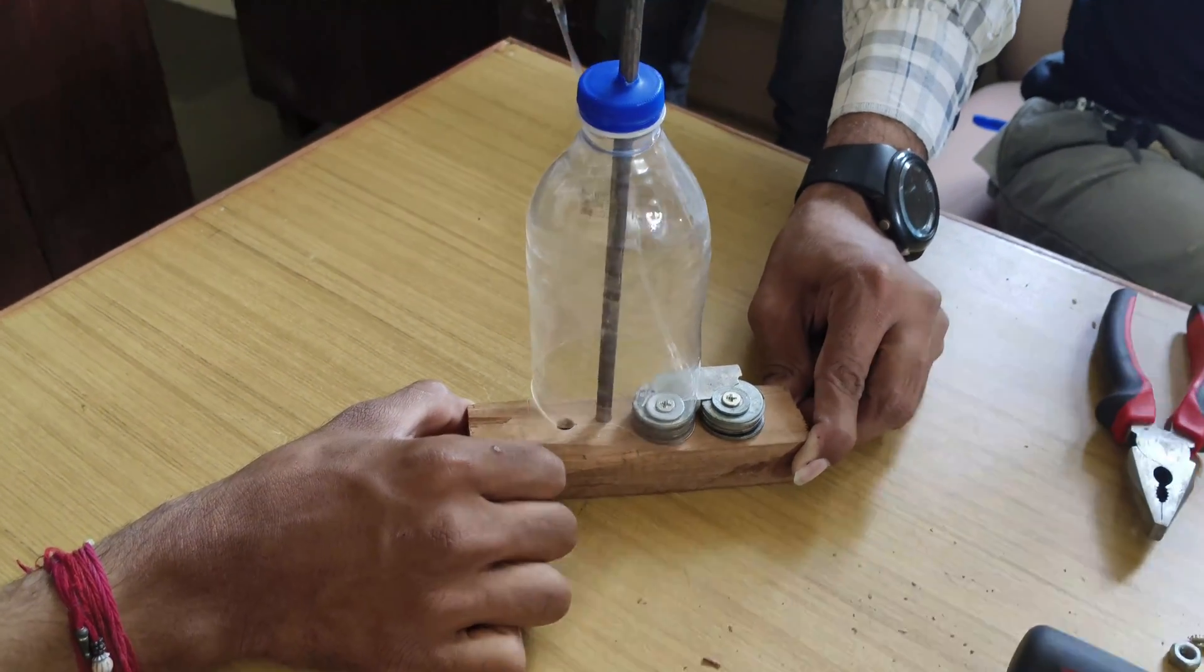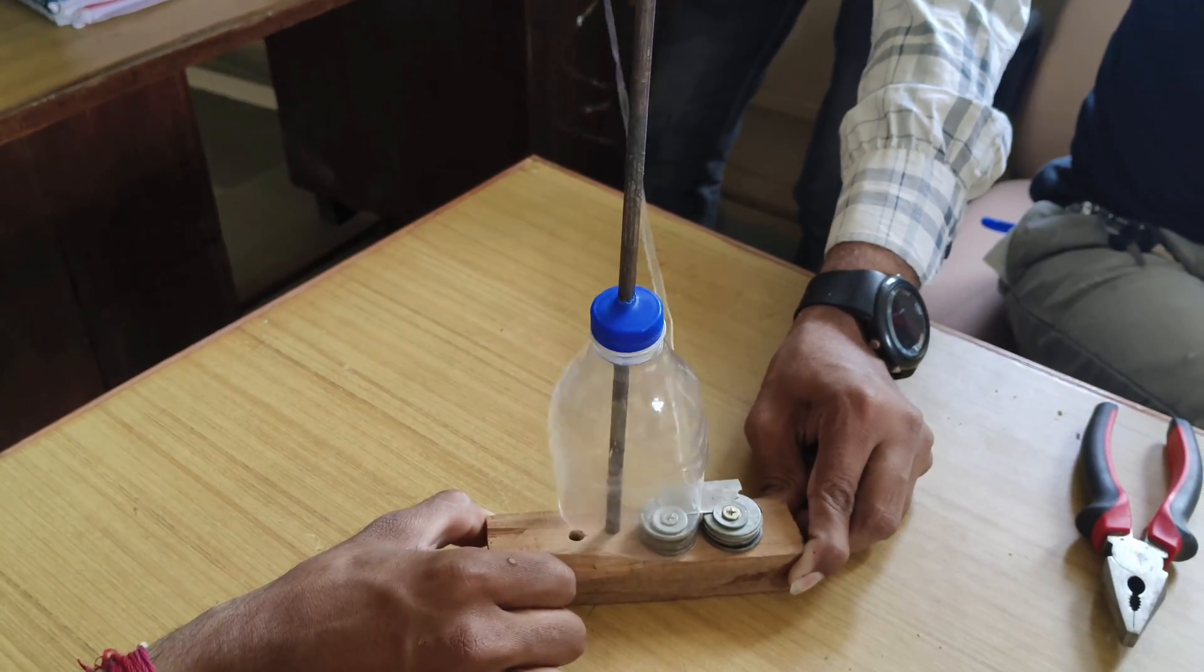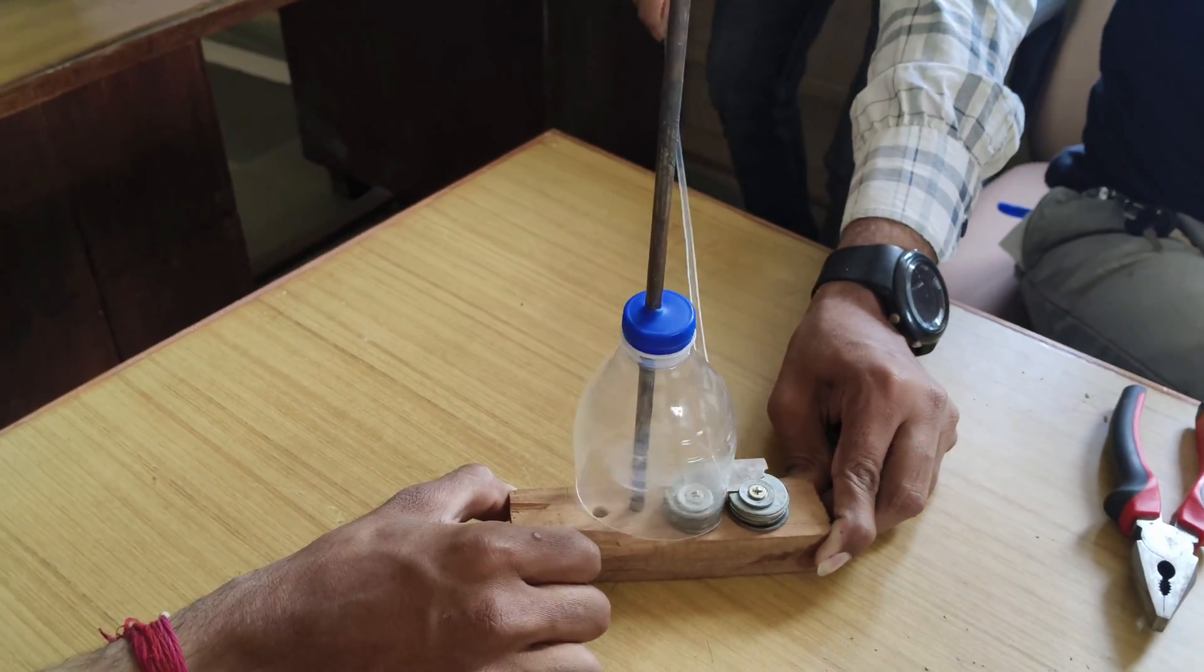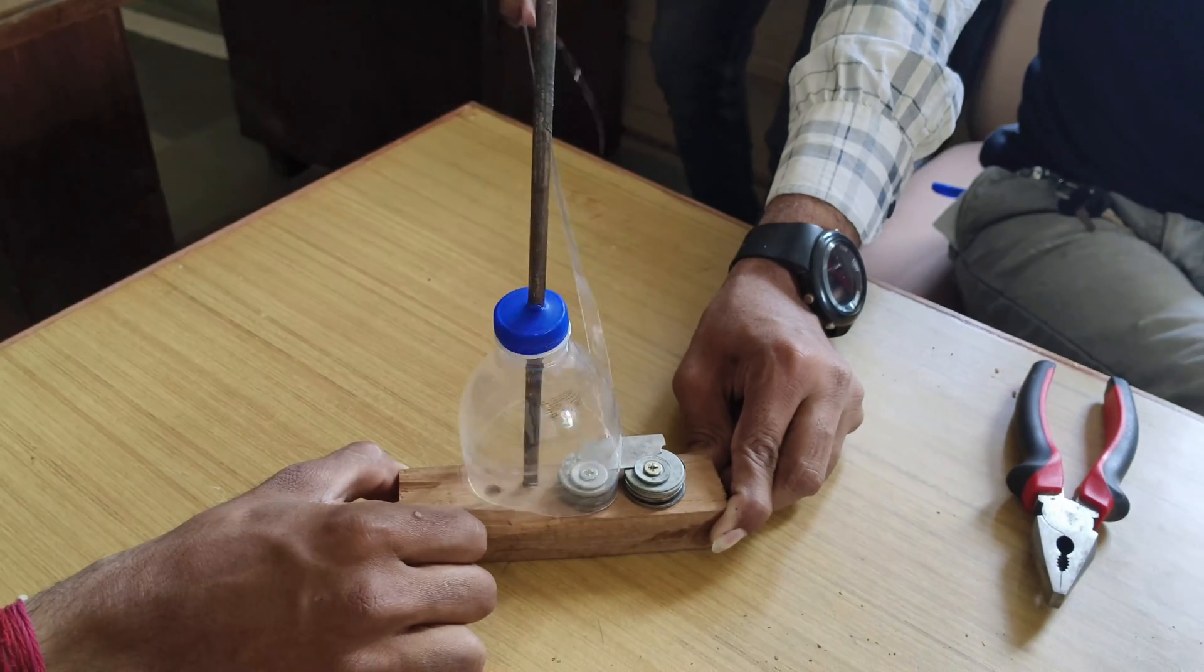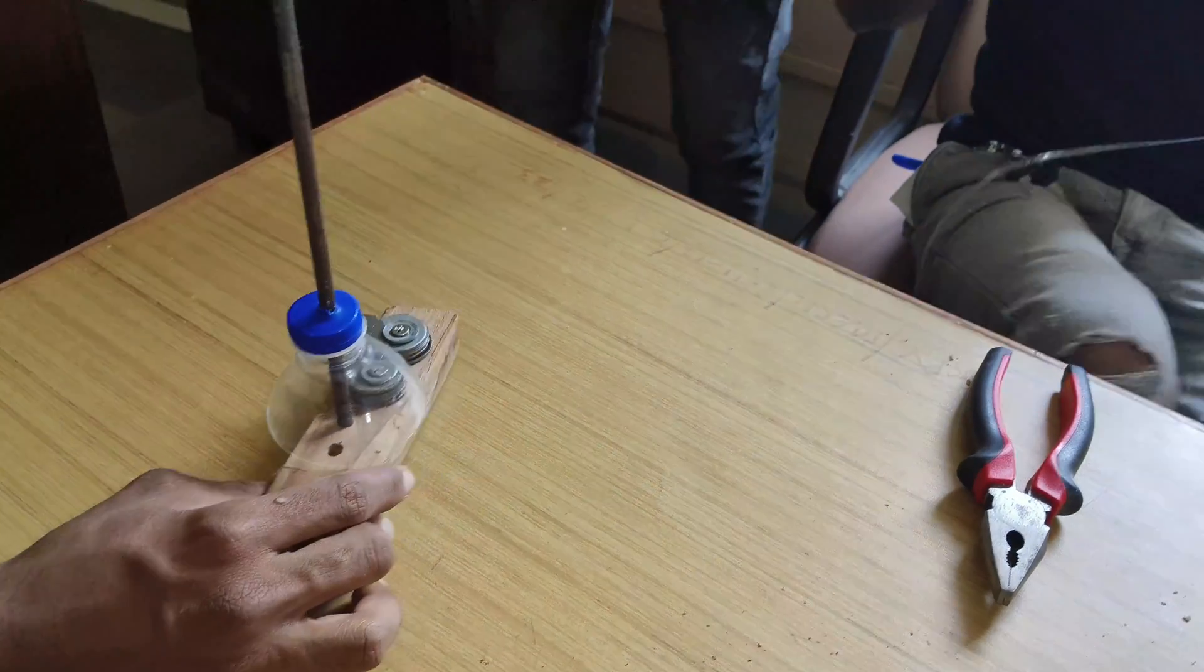We made this simple arrangement using just washers and made a hole on the bottle cap so that bottle does not move sideways. This design is very simple and working very smoothly as expected.